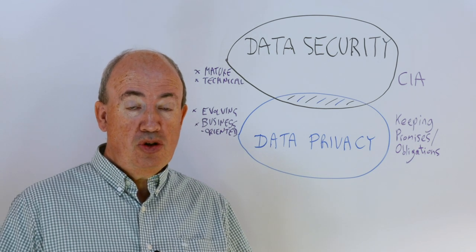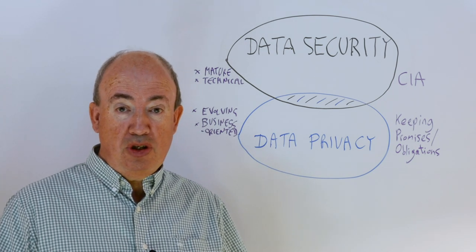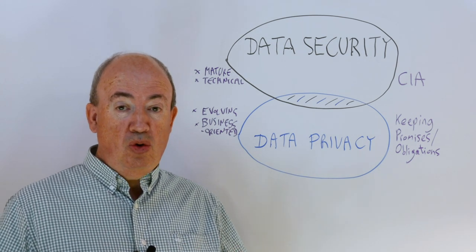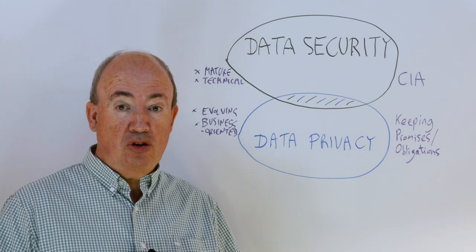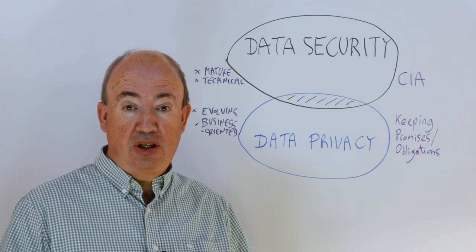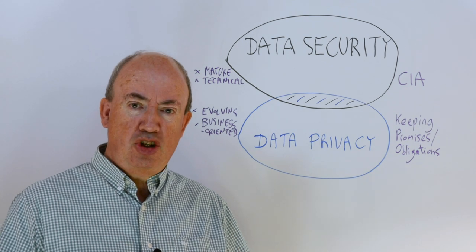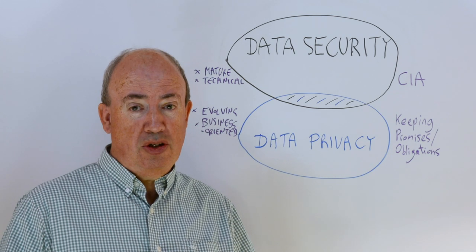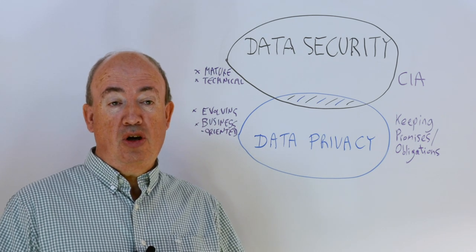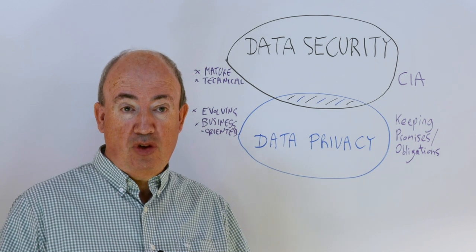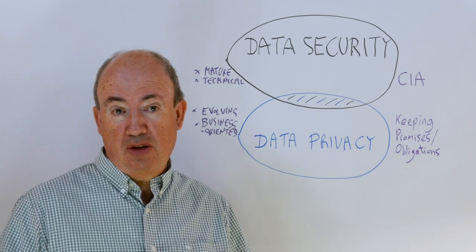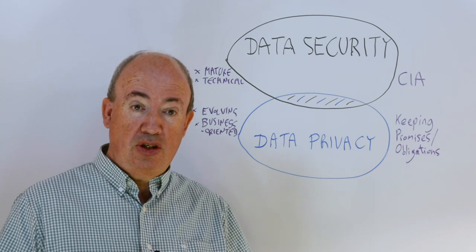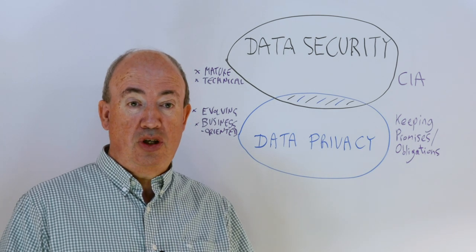But suppose that somebody has legitimate access to data and respects all of the tenets of confidentiality, integrity, and availability. If somebody has legitimate access to data and data security is happy, can they do anything they want with it? When it comes to personal information, that is not the case. And this is where data privacy comes in — you can't just do anything in terms of using or processing the data, even if there's no problem with data security.